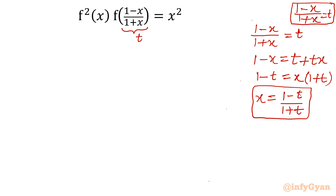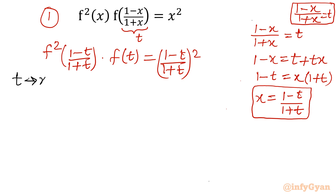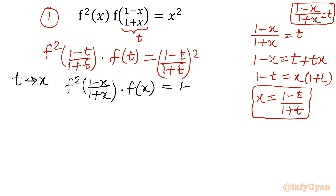Now I will put x as a function of t everywhere. So, f squared of (1 minus t)/(1 plus t) times f of t equals (1 minus t)/(1 plus t) squared. Let us consider this equation 1. Now, I will swap t with x, so equation 1 converts to: f squared of (1 minus x)/(1 plus x) times f of x equals (1 minus x)/(1 plus x) squared. Let us consider this equation 2.